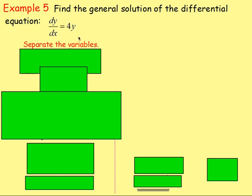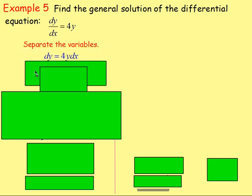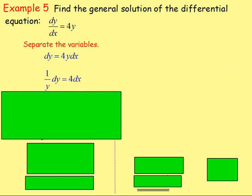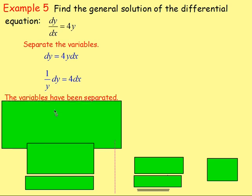Separating the variables, let's multiply both sides by dx. So we end up with dy equals 4y dx. And then divide both sides by y. So we've got the x's on one side and y's on the other. The variables have been separated.